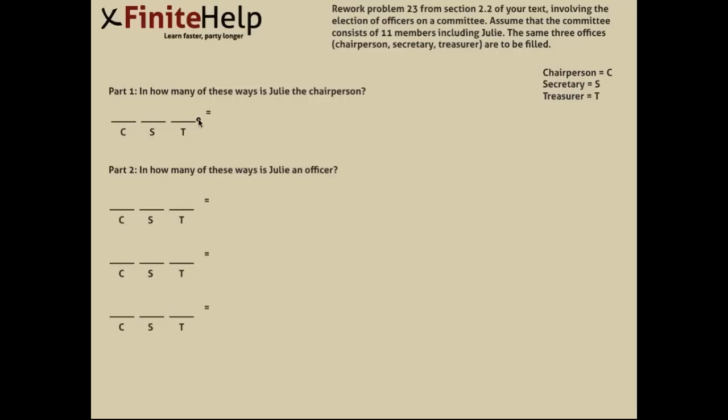Part 1 asks how many of these ways is Julie the chairperson. So, each officer position gets its own slot, and in this case there are three. If we want to know how many ways Julie is the chairperson, we simply assign Julie as the chairperson in the chairperson slot, represented by the C down here. So, we'll just go ahead and put a 1 there for Julie, because she's only one person.